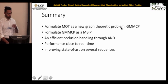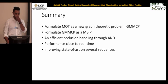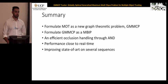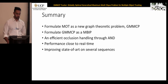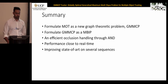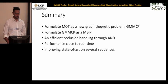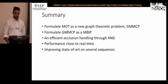In summary, we formulate multiple object tracking as a new graph-theoretic problem called Generalized Maximum Multi-Clique Problem. We propose a solution for GMMCP using mixed binary integer programming, and an efficient occlusion handling approach through aggregated dummy nodes. We show performance close to real-time and improvement over state-of-the-art on several benchmark sequences.